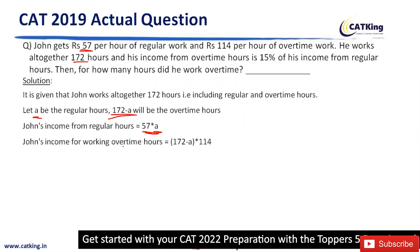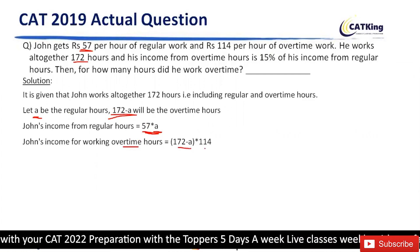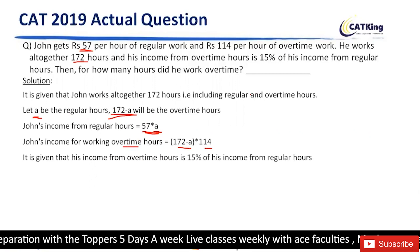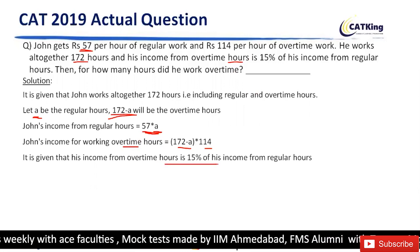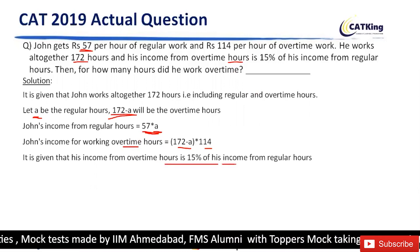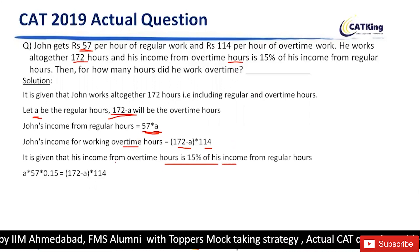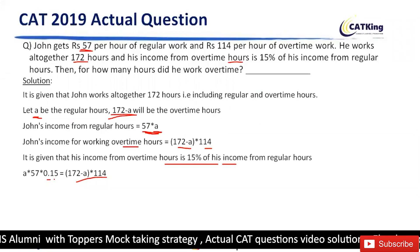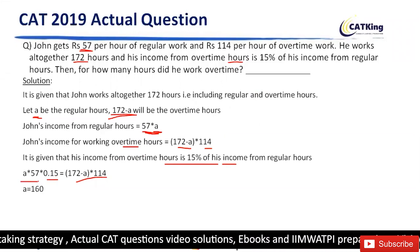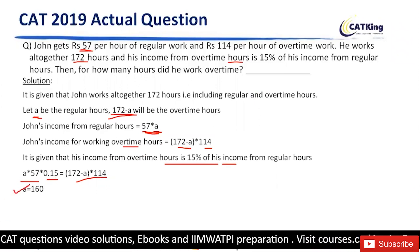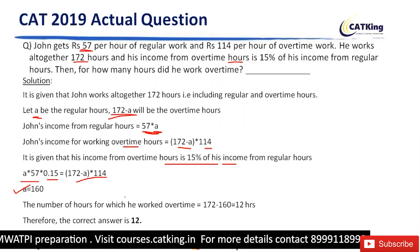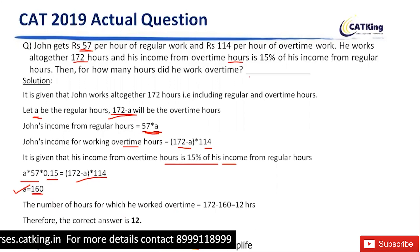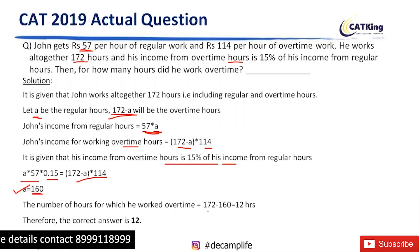Similarly, overtime income would be number of hours into per hour income. We have one more piece of information: overtime income is 15% of his income from regular hours. So overtime income equals 15% of regular income. Equating this, we get the value of a as 160. So the number of overtime hours would be total hours minus 160, that is 12 hours.